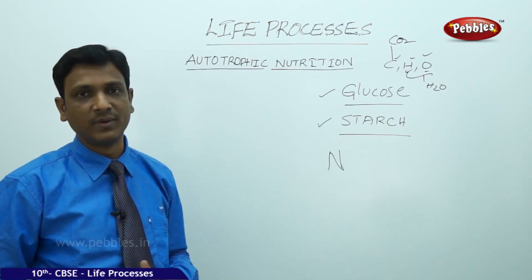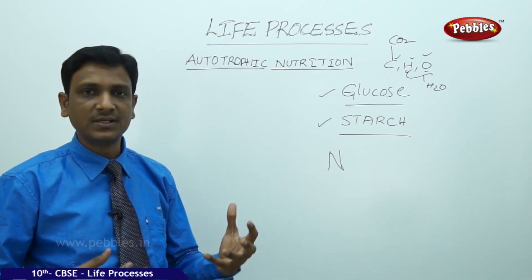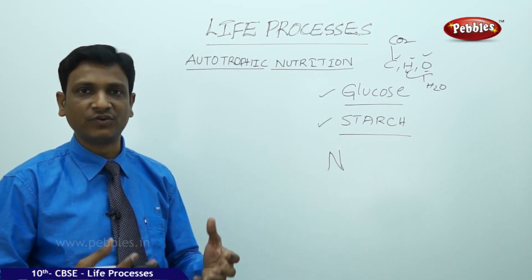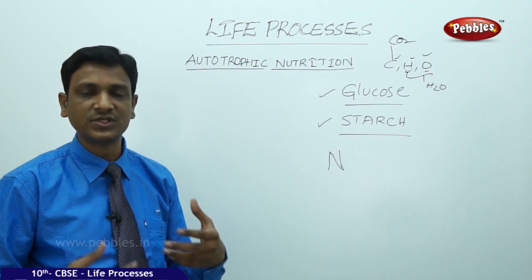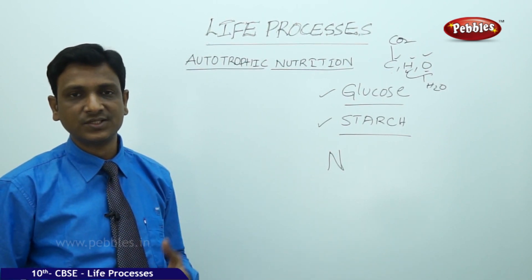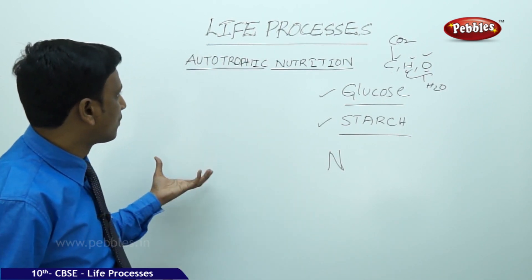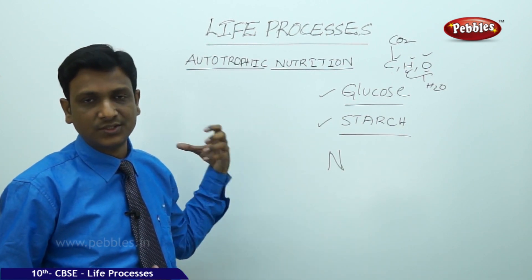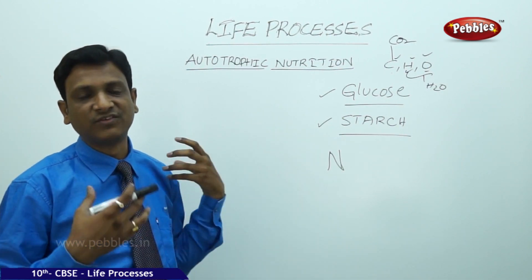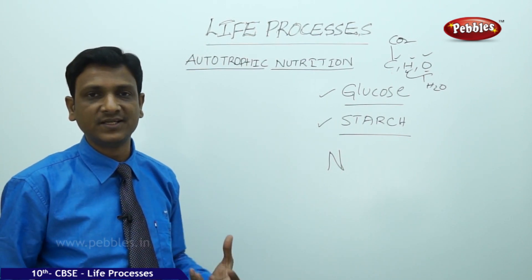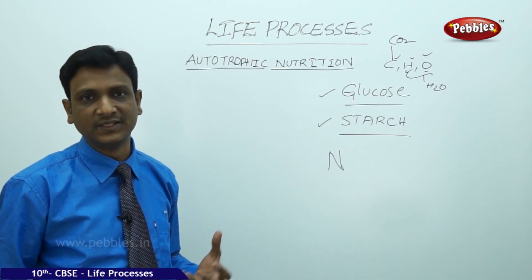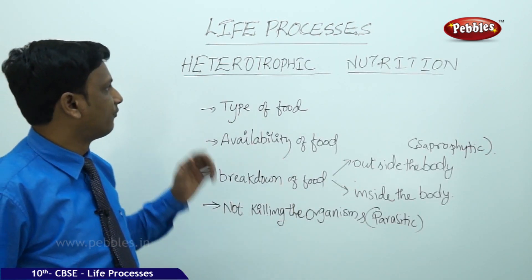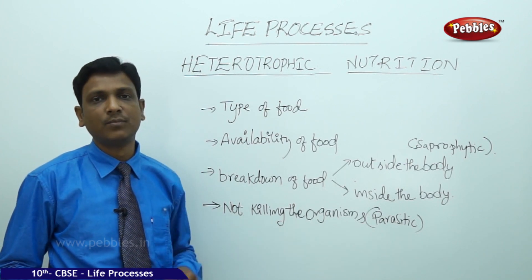By combining nitrogen, phosphorus, sulfur, and other elements with the primary materials glucose and starch, several biochemical reactions take place and a variety of biomolecules are formed in the plant's body. These biomolecules are used for repair, growth, and the formation of flowers, fruits, and other structures. In this way, autotrophic nutrition helps plants meet the requirement of molecules needed for the maintenance, growth, and development of autotrophic organisms.